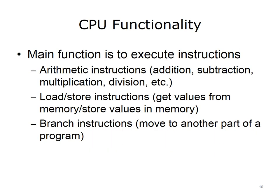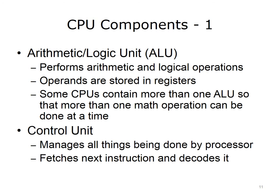The main function of the CPU is to execute instructions. These instructions are very simple, such as basic arithmetic operations like addition, subtraction, and multiplication. Other instructions include load and store instructions, which retrieve values from memory or store values in memory. The CPU also executes branch instructions, used to move from one part of a program to another part of a program. The CPU is made up of two parts: the Arithmetical Logical Unit, or ALU, and the Control Unit. The ALU performs arithmetic and logical operations. Some CPUs contain more than one ALU, so that more than one math operation can be performed at a time.